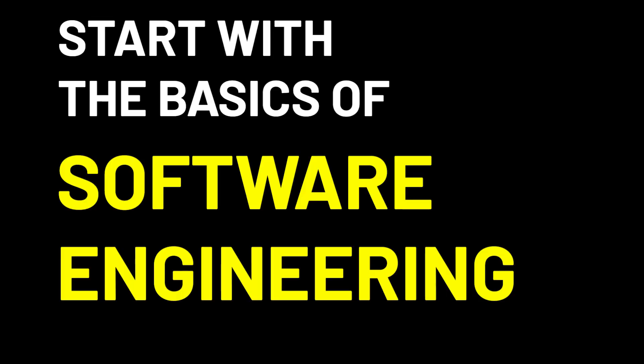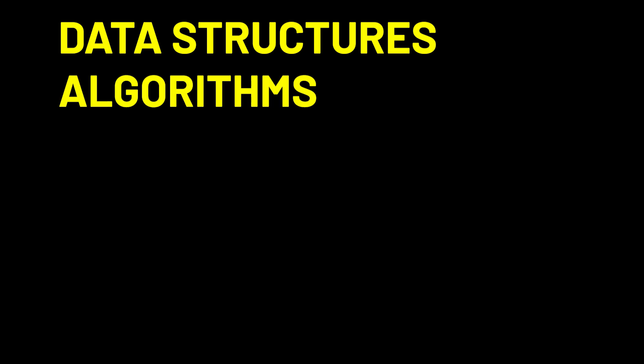Here's my recap: start with the basics of software engineering — data structures, algorithms — then learn Python, SQL, data APIs, and most importantly databases. After that, you'll dive into distributed systems and cloud engineering, and eventually touch big data tools like Airflow, Spark, and Hadoop, which are frameworks that allow distributed processing of large datasets. But that's what I'll cover in another video.